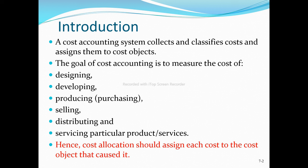The general goal of cost accounting is to measure the cost of production — designing, developing, producing, selling, distributing, and servicing a particular product or service. Each department activity is measured: designing, developing, producing, selling — all these costs are determined and measured.